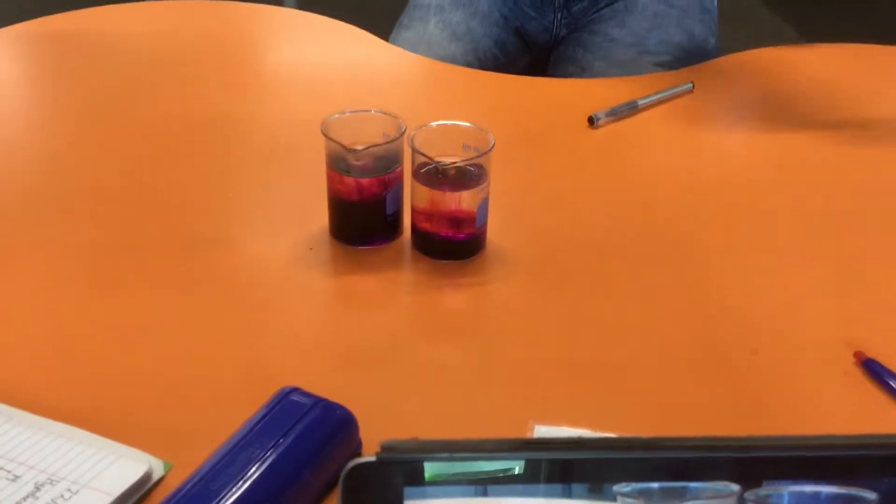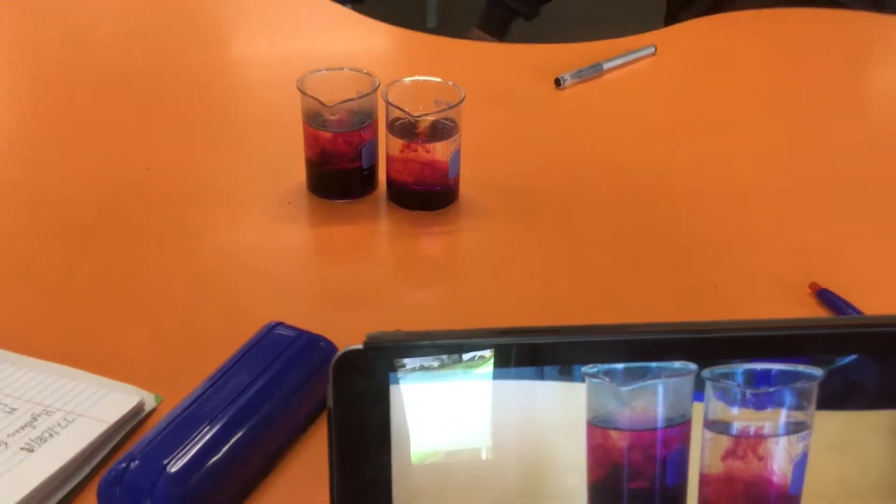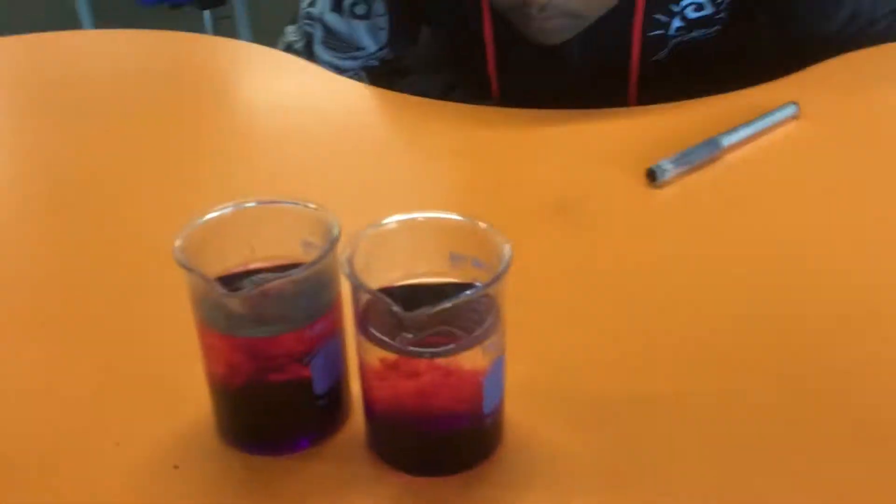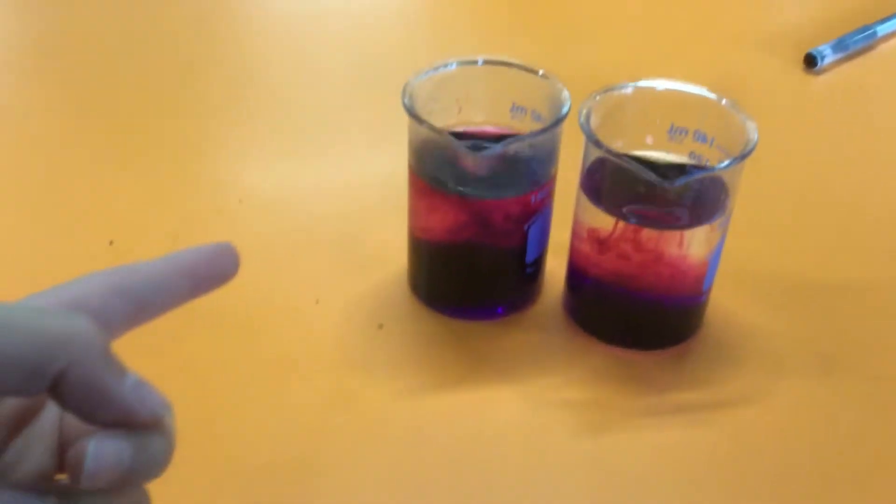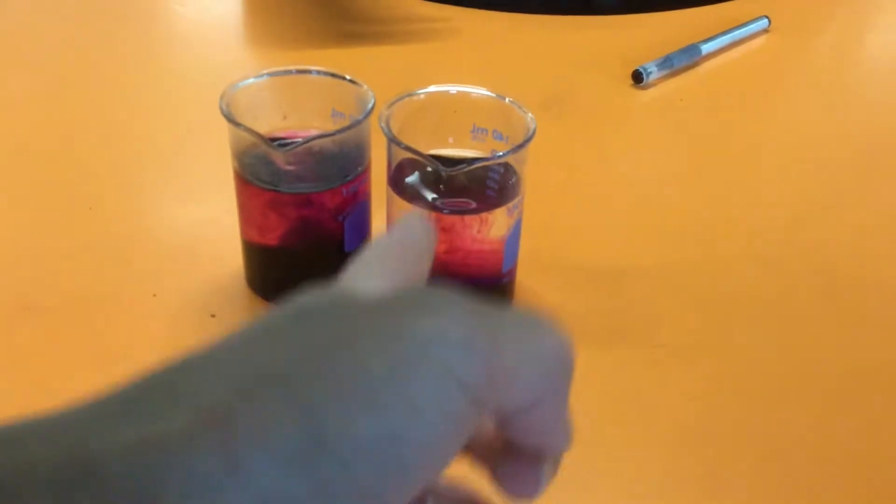Don't bump the table. Observe the difference between the spirals. Okay, so take a close-up photo. See, this one right here, wait Christian, can I take a photo of it? This one right here is the hot water. This one is the cold water.